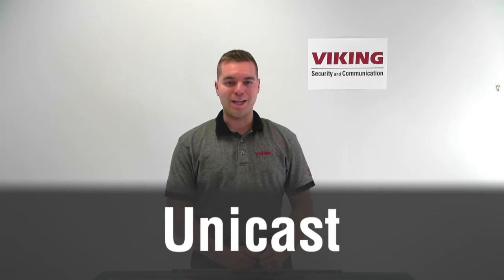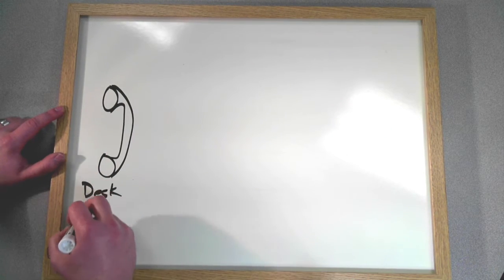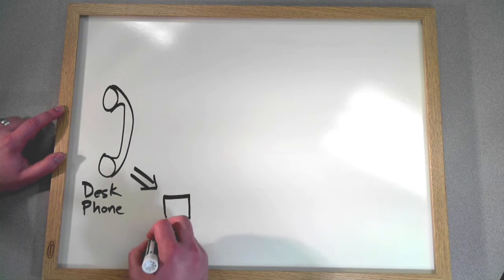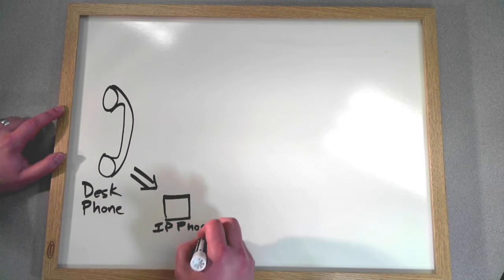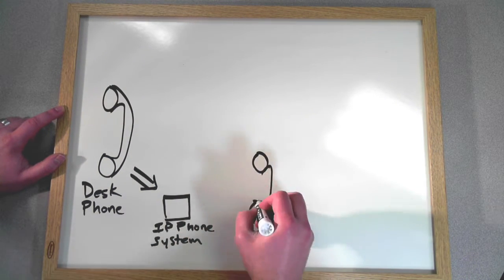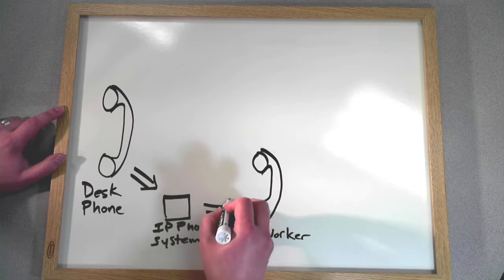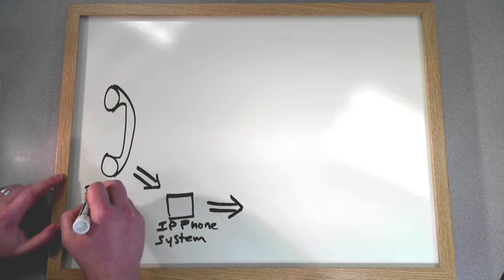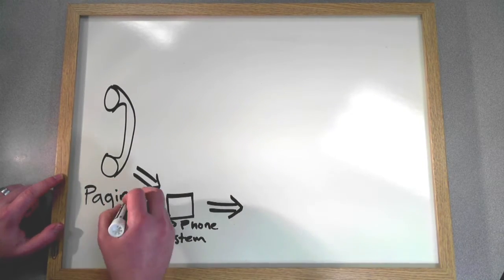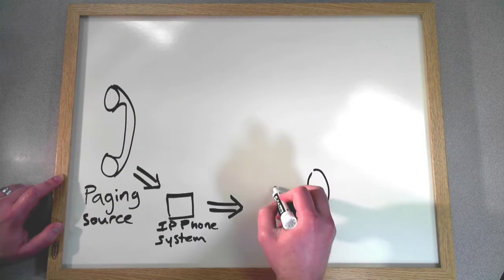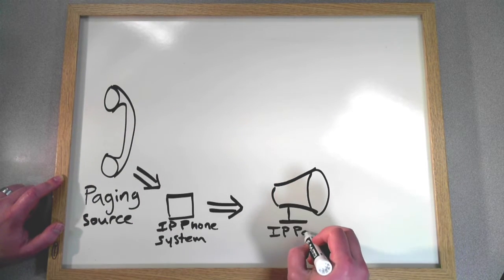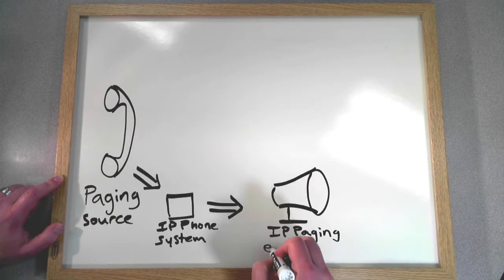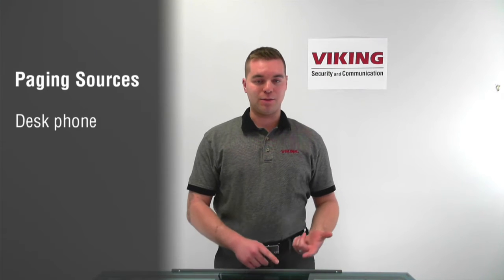Let's start with unicast paging. The best way to describe unicast paging is to compare it to a traditional IP phone call, where you pick up your desk phone and dial a co-worker. A unicast page originates from a paging source and places a call to a paging endpoint. Common examples of paging sources could be your desk phone, your class or work scheduled bell tones, or a mass notification announcer.